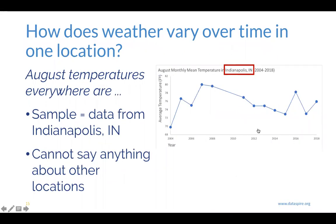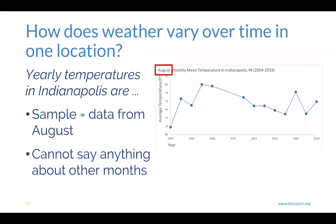Let's explore more. If we're working with the broad question of how does weather vary over time in one location, and we're using a graph of August monthly mean temperatures in Indianapolis, Indiana, with data from 2004 to 2018 — year along the horizontal x-axis and average monthly temperature along the y-axis — a student might try to claim 'August temperatures everywhere are...' The problem is our sample data are only from Indianapolis, Indiana, so we can't say anything about other locations from these data. Similarly, a student may say 'yearly temperatures in Indianapolis are...' but our sample is only from August, so we can't say anything about other months from these data alone.